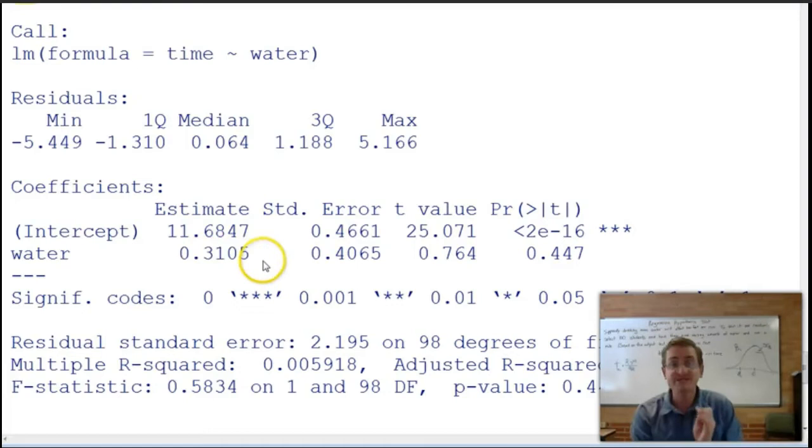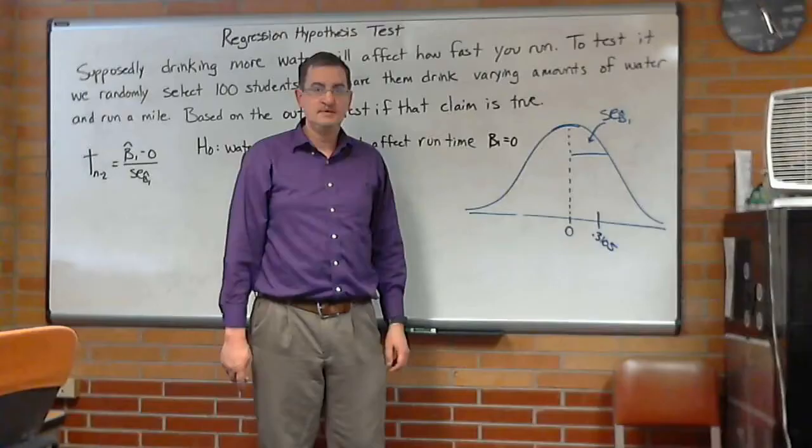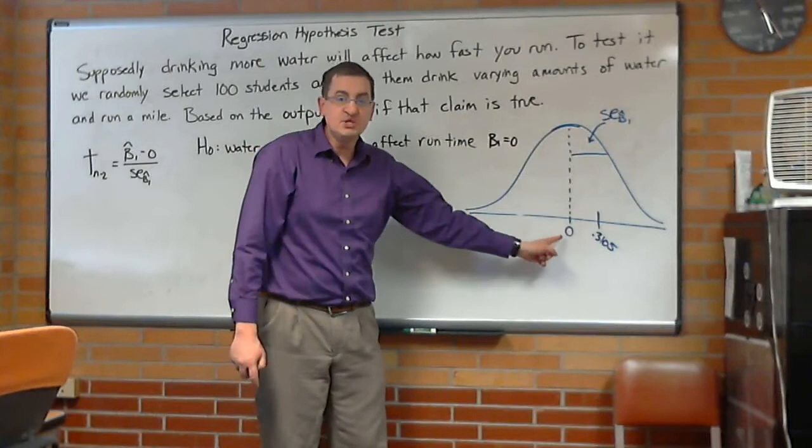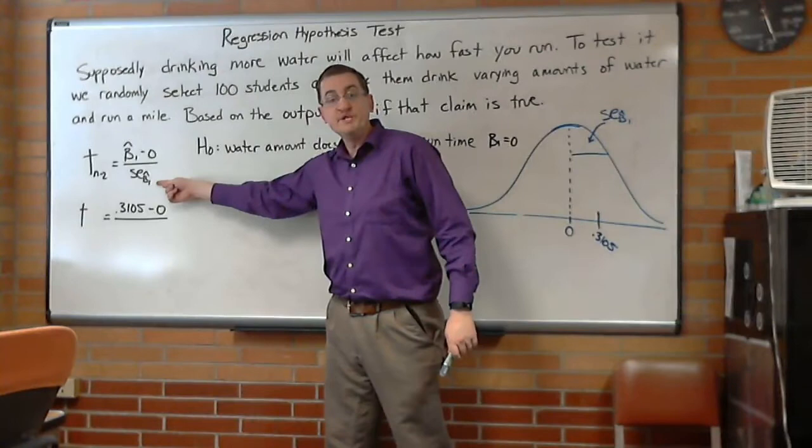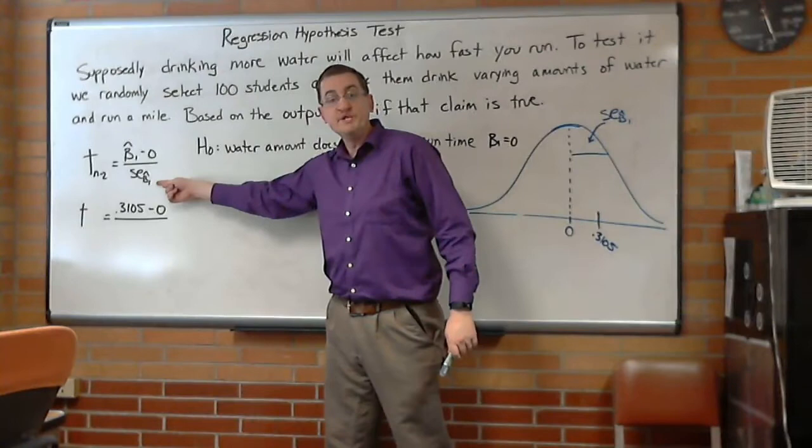I'll talk about that later. For the slope, here is our estimate, 0.3105. That's the slope we got. Remember the null hypothesis said we were going to get zero. Well, we didn't exactly get zero. We got 0.3105. Okay, well, what does that mean? It means the slope we got wasn't zero. It's 0.3105, and that's the number that goes right here in our equation. So, we're basically halfway done calculating this.